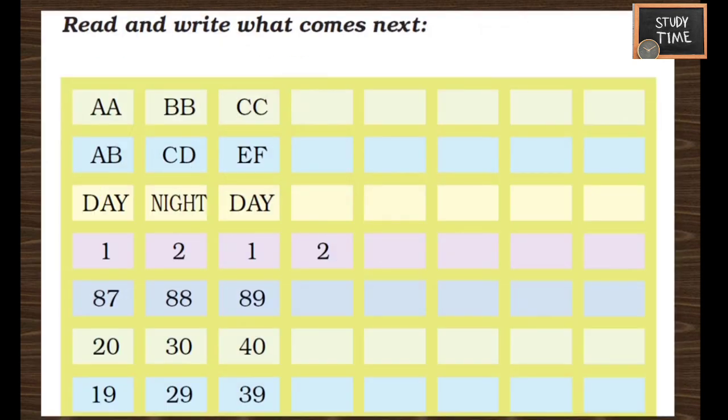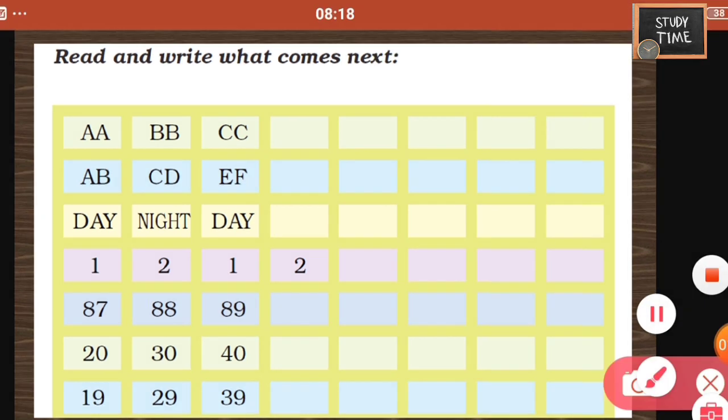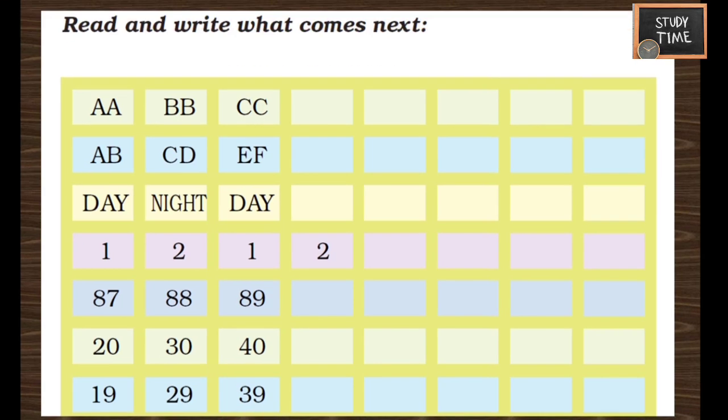Read and write what comes next. First observe the pattern and then write. A, A, B, B, C, C is given — you have to continue writing D, D, E, E, F, F, G, G, H, H. Next: A, B, C, D, E, F, G, H, I, J, K, L, M, N, O, P — so you are writing two alphabets.